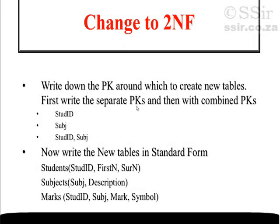We write the separate primary keys first and then the combined primary key. The first part of the primary key was student ID, the second part was subject, and in the third line we combine them: student ID and subject.